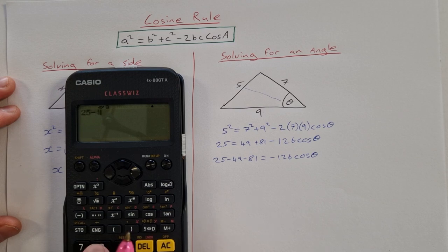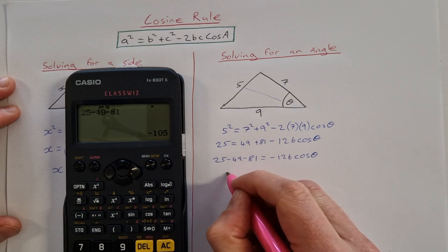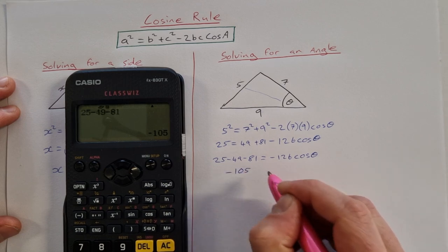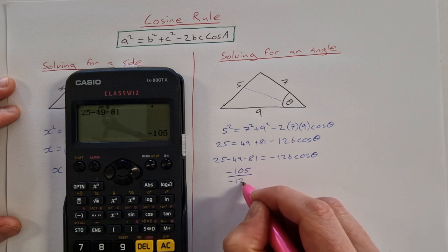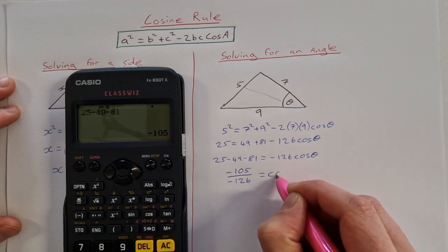25 minus 49 minus 81 is minus 105. So if minus 105 divide by the minus 126, minus 126 is equal to cos theta.